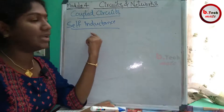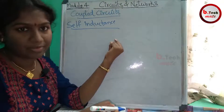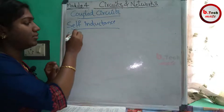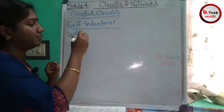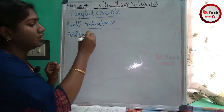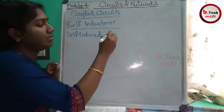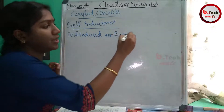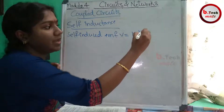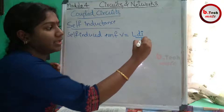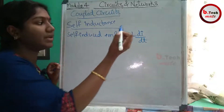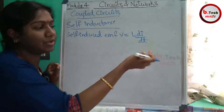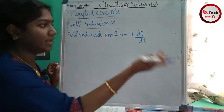We call it Self Induced EMF. The formula is V equals L into dI by dt. This is the induced voltage.